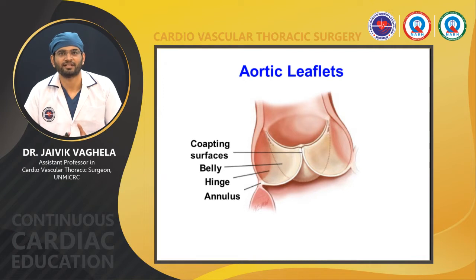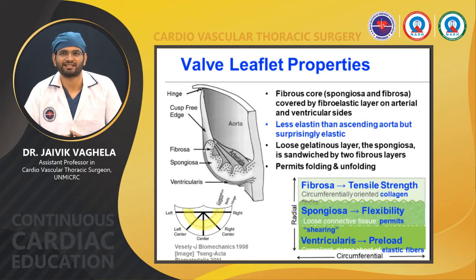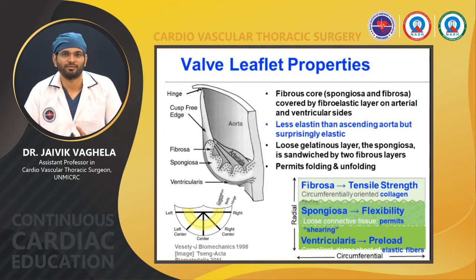The aortic leaflets have a co-aptation surface, a belly, and a hinge — the co-aptation surface being the uppermost portion, mainly important for aortic valve competence. The leaflet layers from the ventricular side upward are: the ventricularis, then the spongiosa, then the fibrosa, up to the cusp free edge. The fibrous core is covered by a fibroelastic layer on the arterial and ventricular sides. The spongiosa is a loose gelatinous layer sandwiched between two fibrous layers, permitting folding and unfolding. The fibrosa is responsible for tensile strength via circumferentially oriented collagen, while the ventricularis is responsible for preload.